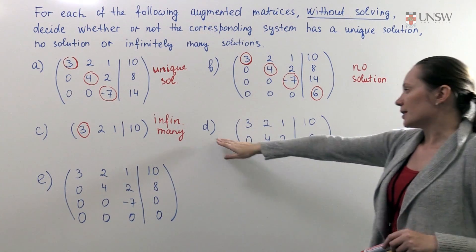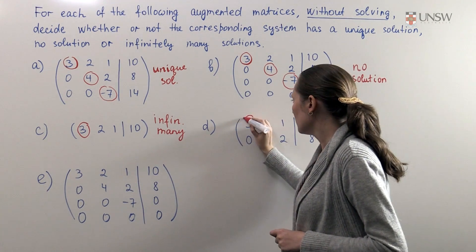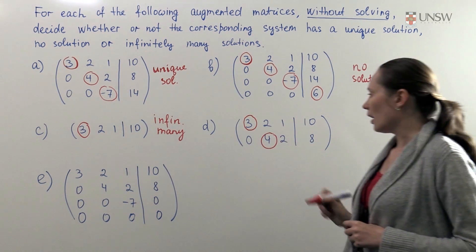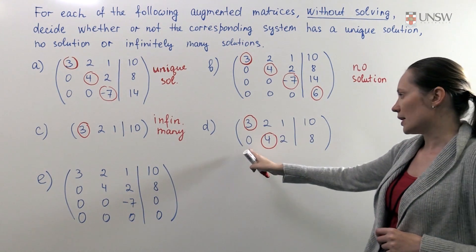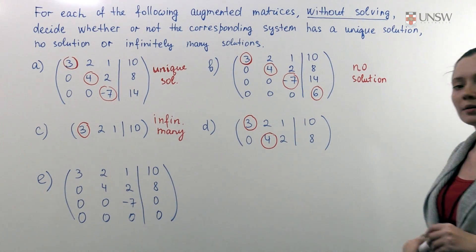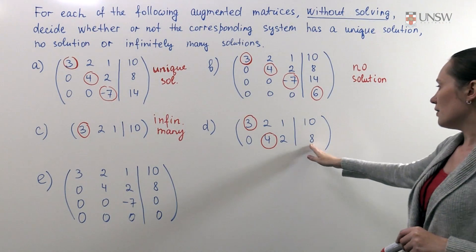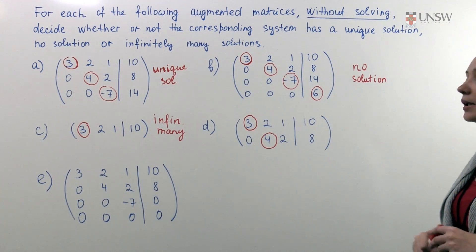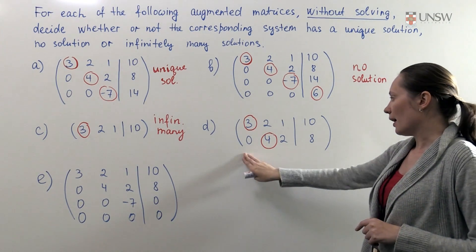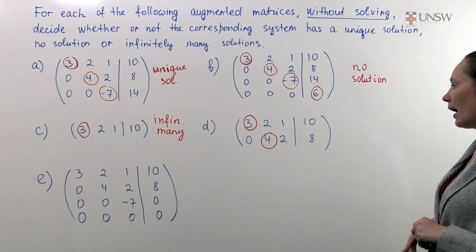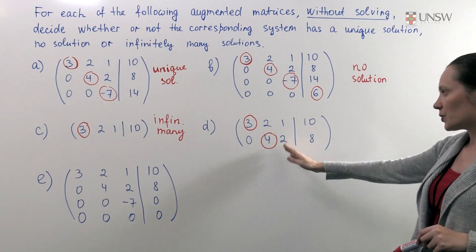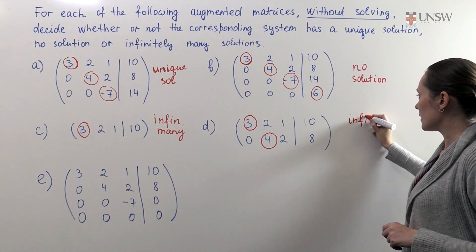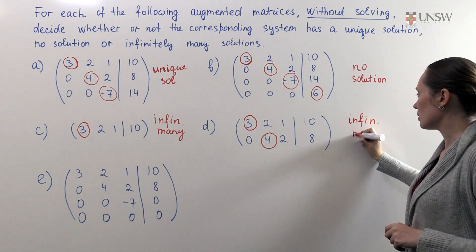For part D, again we look at all leading terms. We see that in this case we have two leading columns and two non-leading columns. The constant vector column is non-leading. Therefore we look at the remaining columns, and among the remaining columns we have one non-leading column. Therefore we conclude that it has infinitely many solutions.